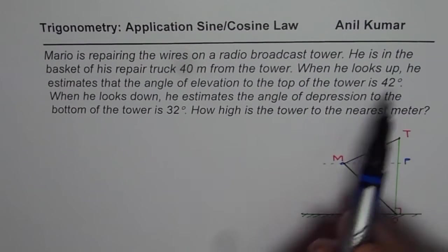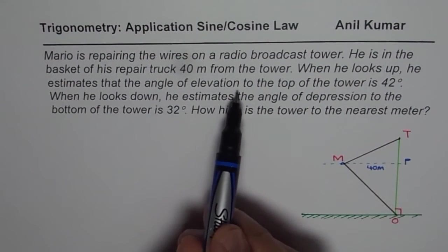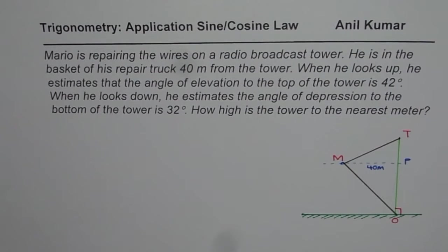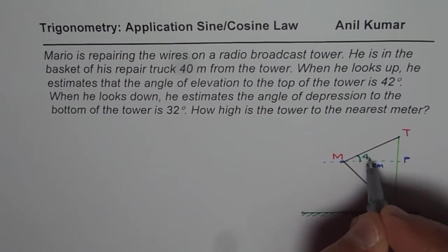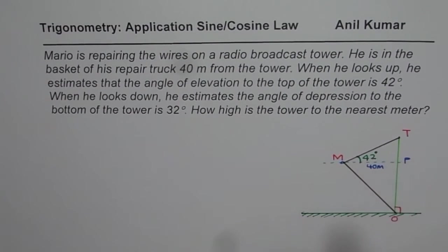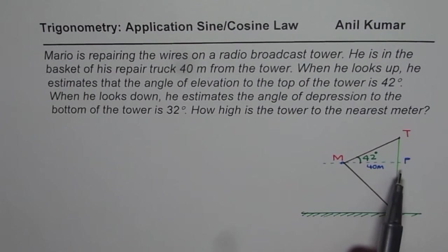When he looks up, he estimates that the angle of elevation to the top is 42 degrees. So, I have drawn a smaller angle here, but this angle is actually bigger. It is 42 degrees. Let me write 42 here. That is angle of elevation. Angle of elevation is always with the horizontal.